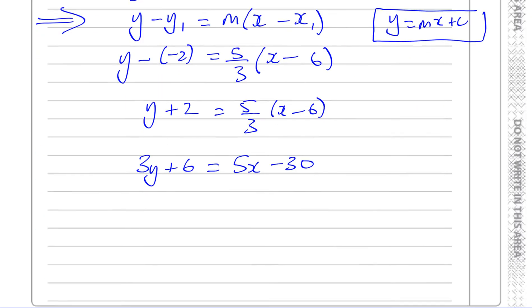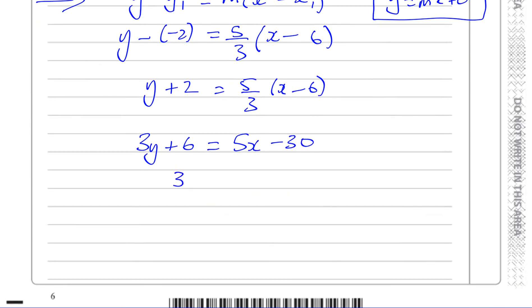So we can say 3y is equal to 5x. We've got to subtract 6 from both sides to get rid of this positive 6 from this side, so that's minus 36: 5x minus 36. And then we're going to divide both sides by 3.